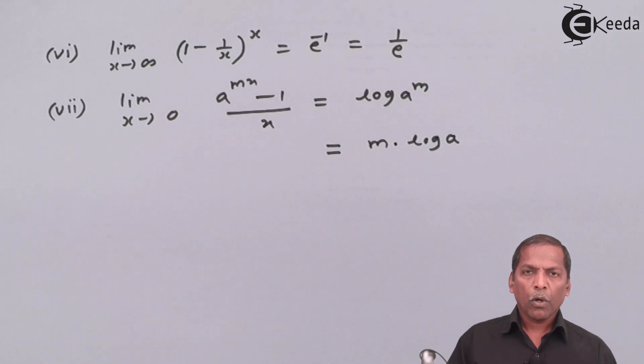So these seven formulas are totally based on exponential functions, and we have to remember them because they are useful for solving the problems of continuity. So this is all about the limits of exponential functions. Thank you.